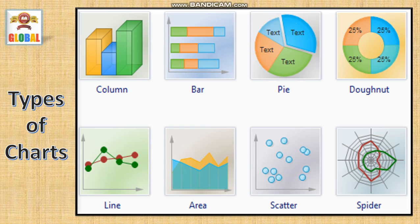Now, in MS Excel, there are different types of options available in the chart group in the insert tab. These are different types of charts available in MS Excel. This is a column chart. Then, this is bar chart. This is pie chart. This is donut chart. Line chart. Area chart. Scatter chart. And spider chart. Let us understand these types of charts one by one.